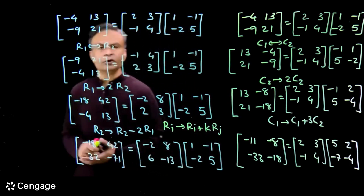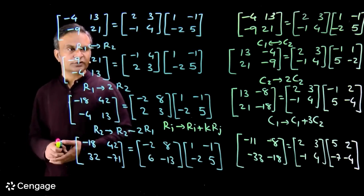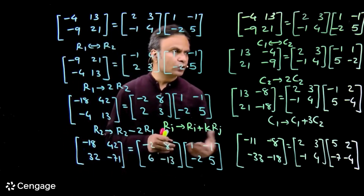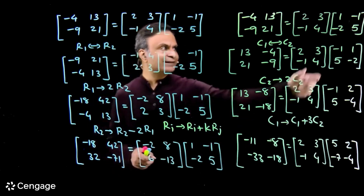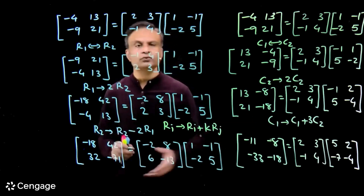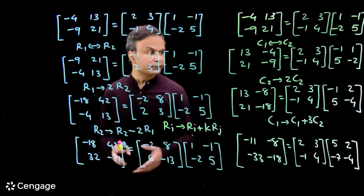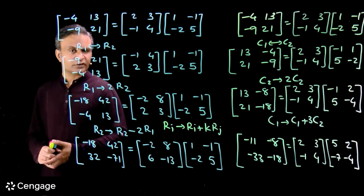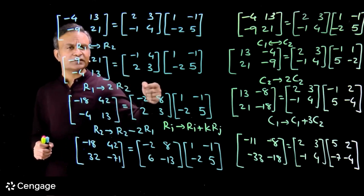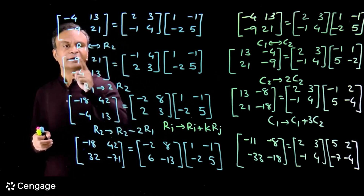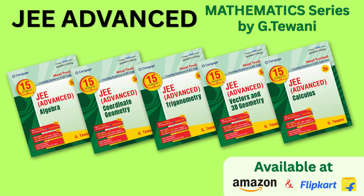So what is the finding? If you want to do row operations or row transformations, do it in the pre-multiplier matrix; and if you want to do column operations or column transformations, do it in the post-multiplier matrix. Using this, we can find the inverse of a matrix without using the standard definition A inverse = adjoint of A upon mod A.